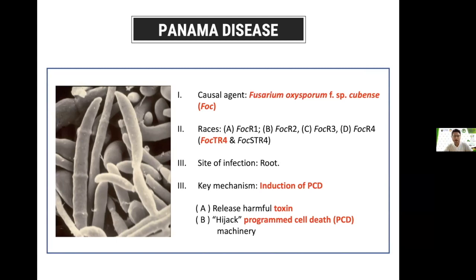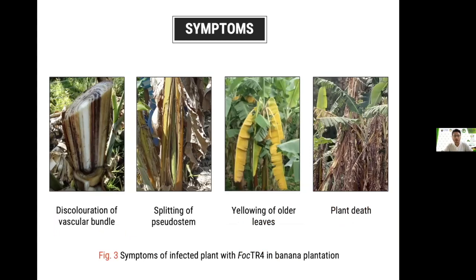However, banana, like other plants, is also prone to disease, and one of the major diseases in banana plantations is known as Panama disease. The causal agent for this disease is Fusarium oxysporum cubanse, or FOC. Four races of FOC have been identified, and the most virulent strain affecting commercialized bananas is FOC TR4. The site of infection is at the root, and the key mechanism involved is the induction of programmed cell death, or PCD. FOC releases harmful toxins to induce PCD, causing discoloration of vascular bundles, splitting of the stem, yellowing of older leaves, and in severe cases, total plant death.